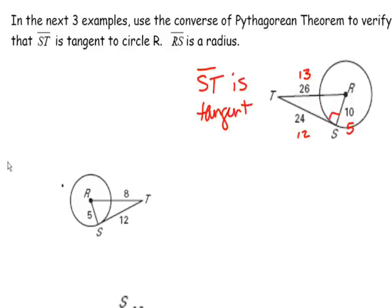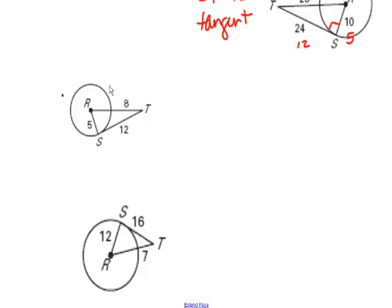For the next problem, if ST is a tangent, this must be a right triangle, meaning the segment must be the hypotenuse. The hypotenuse must be the longest side. Since the radius is 5 and all radii are congruent, the whole segment is 5 plus 8, which is 13 — again a 5-12-13 right triangle. So ST is tangent.